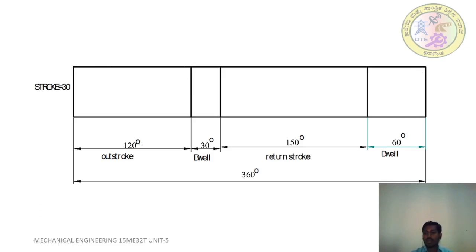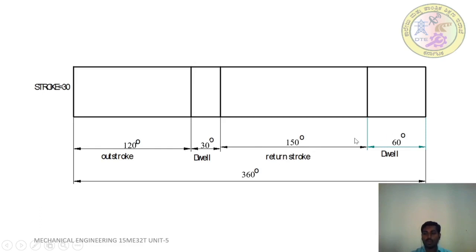The given angles are: outstroke 120 degrees, dwell 30 degrees, return stroke 150 degrees, and dwell 60 degrees. At scale 1:2: outstroke is 6 cm, dwell is 1.5 cm, return stroke is 7.5 cm, and the next dwell is 3 cm. Mark these on the horizontal line accordingly.